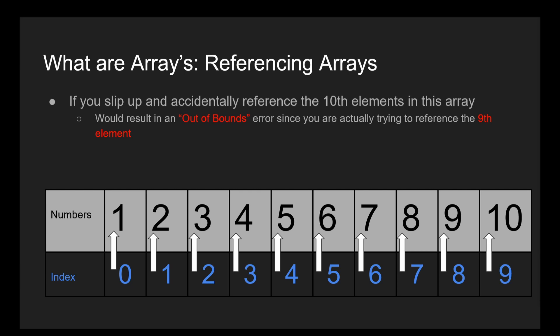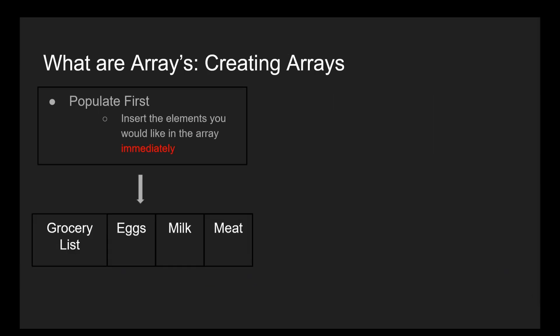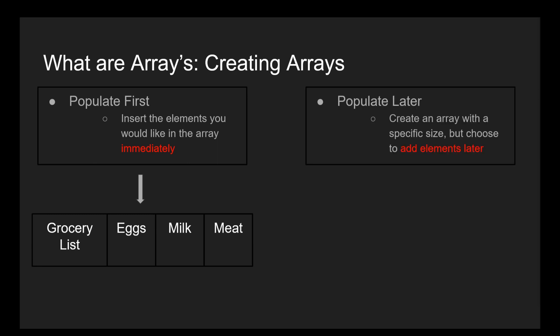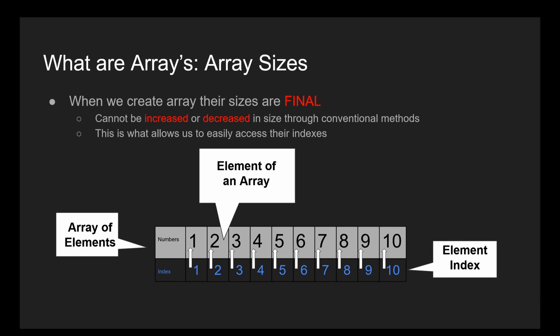Another extremely important thing to note about arrays has to do with size. When you initialize an array you can do it one of two ways. You can either populate it with the elements that you want contained in the array right then and there, creating and filling the array at the same time. Or you can define how many elements you want in the array — essentially the array size — and then populate it with elements later. This is because when we initialize an array it creates a space in memory that has a size of exactly what you give it, no more no less. This is great for when we want to access elements in the array because we can do so instantaneously, but the one downside is that we can't increase the size of the array later on.